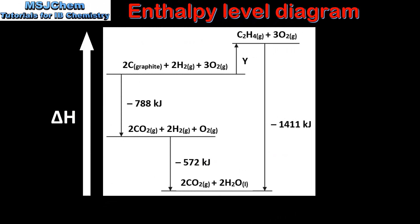In our next example we'll look at an enthalpy or energy level diagram. We'll start with the downwards arrow on the right which is for the enthalpy change of combustion of C2H4, which is ethene. In the reaction one mole of ethene reacts with three moles of oxygen to form two moles of carbon dioxide and two moles of water. The enthalpy change for this reaction is negative 1411 kilojoules per mole. Next we look at the enthalpy change given the letter Y. This enthalpy change represents the formation of one mole of ethene from its elements carbon and hydrogen, which is the enthalpy change of formation.